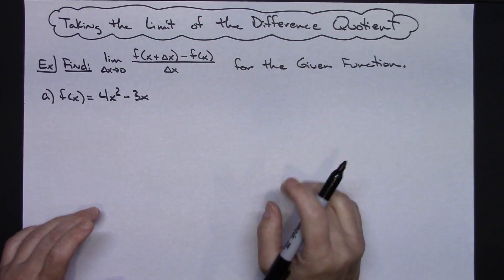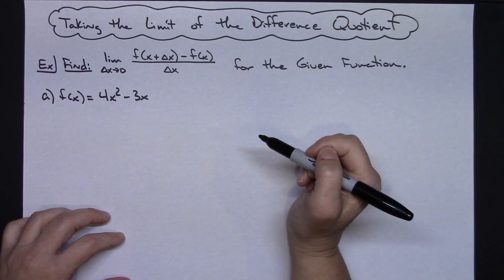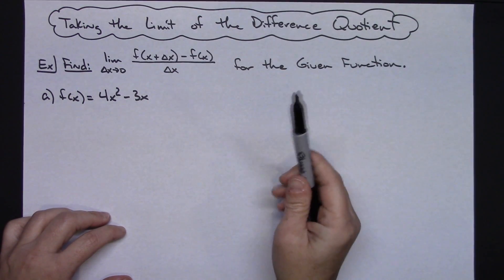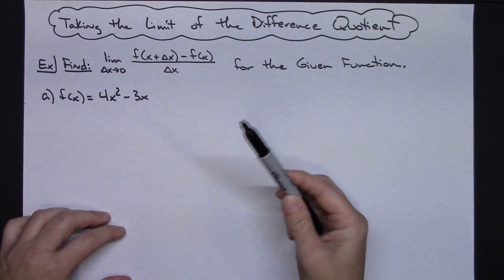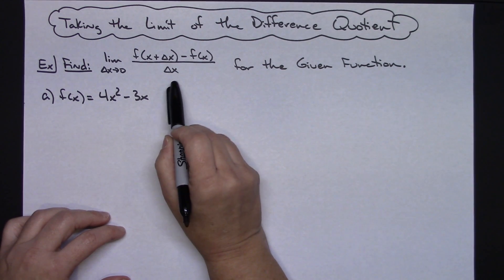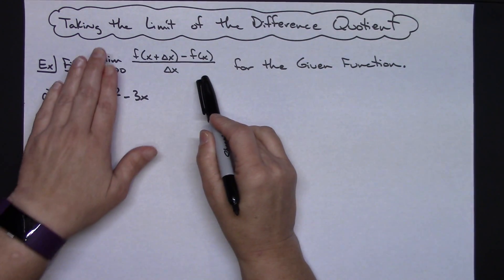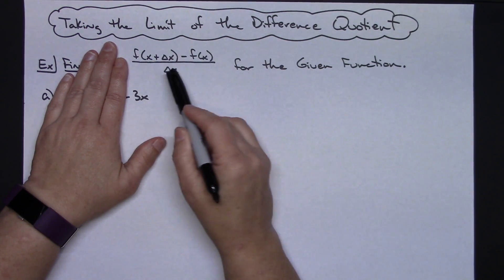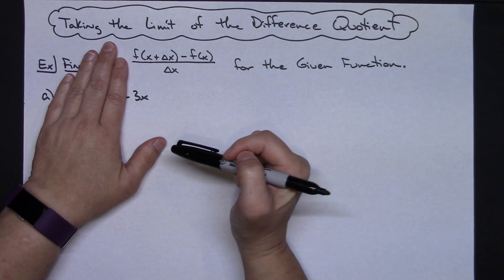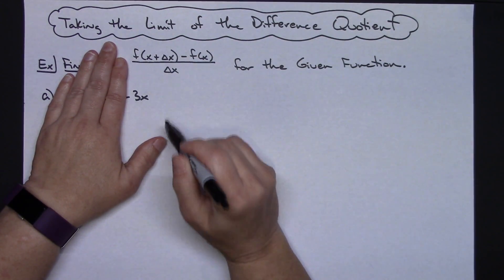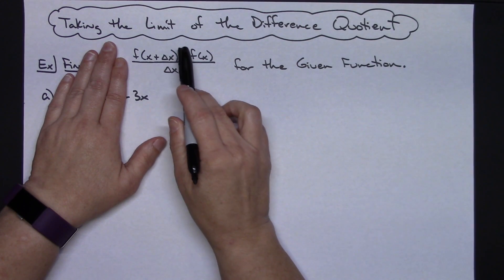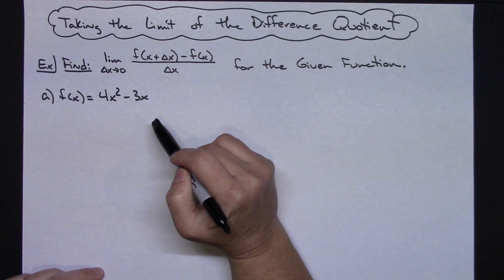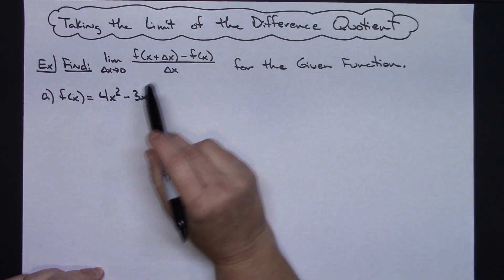In this video I'm going to be showing you how to take the limit of the difference quotient. Hopefully in a pre-calc class you worked with this difference quotient a lot and got comfortable with the algebra. Right here, without the limit notation in front of it, that is the difference quotient written using delta x. Sometimes there's an h there — the formula can be written a variety of ways. In a calculus class you start taking the limit of the difference quotient.